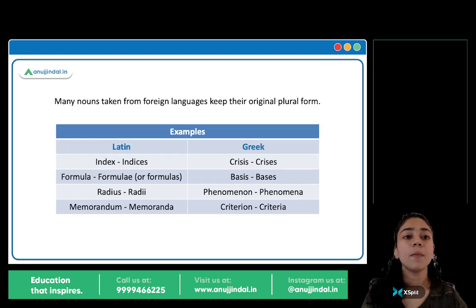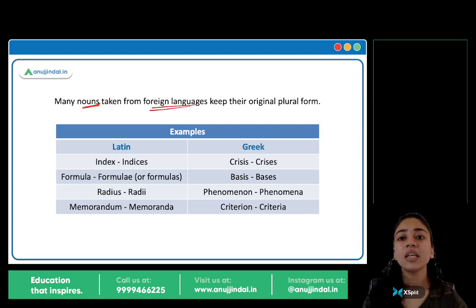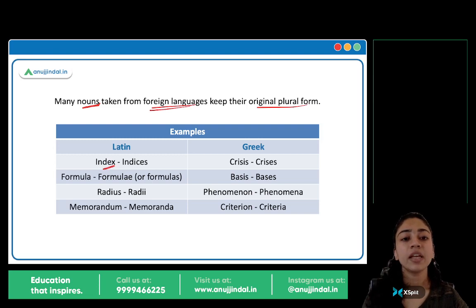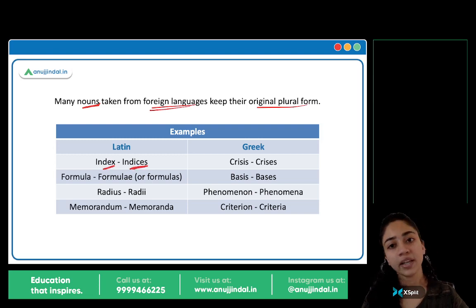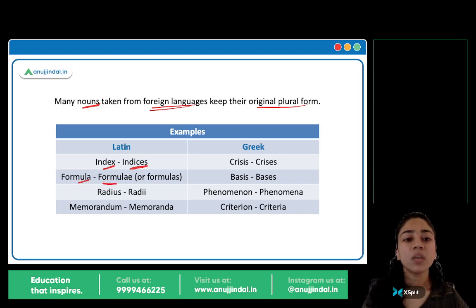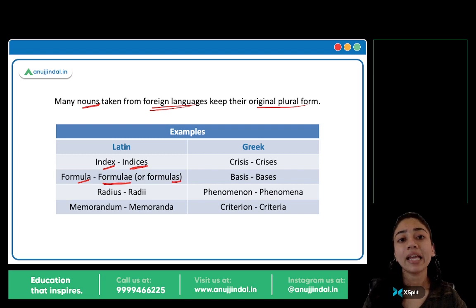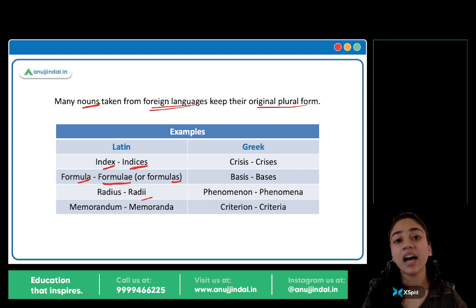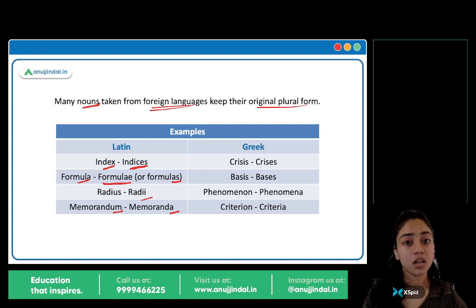Next — many nouns are taken from foreign languages; they keep the original plural form. Jo words Latin se hain, jaise index — inka plural dekho: indices. Formula — uska plural actually hai formulae; formulas bhi bolta hai in English mein, lekin the actual plural form is formulae. Radius ka plural hai radii, not radiuses. Memorandum ka plural hota hai memoranda. Yeh saare words Latin hain.